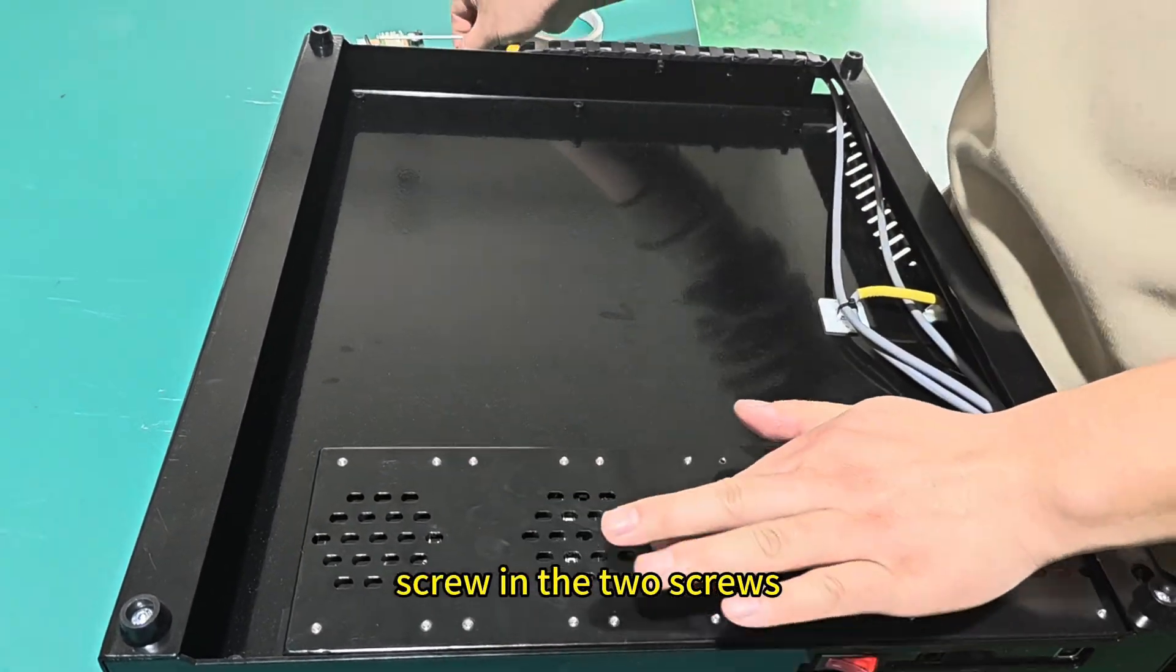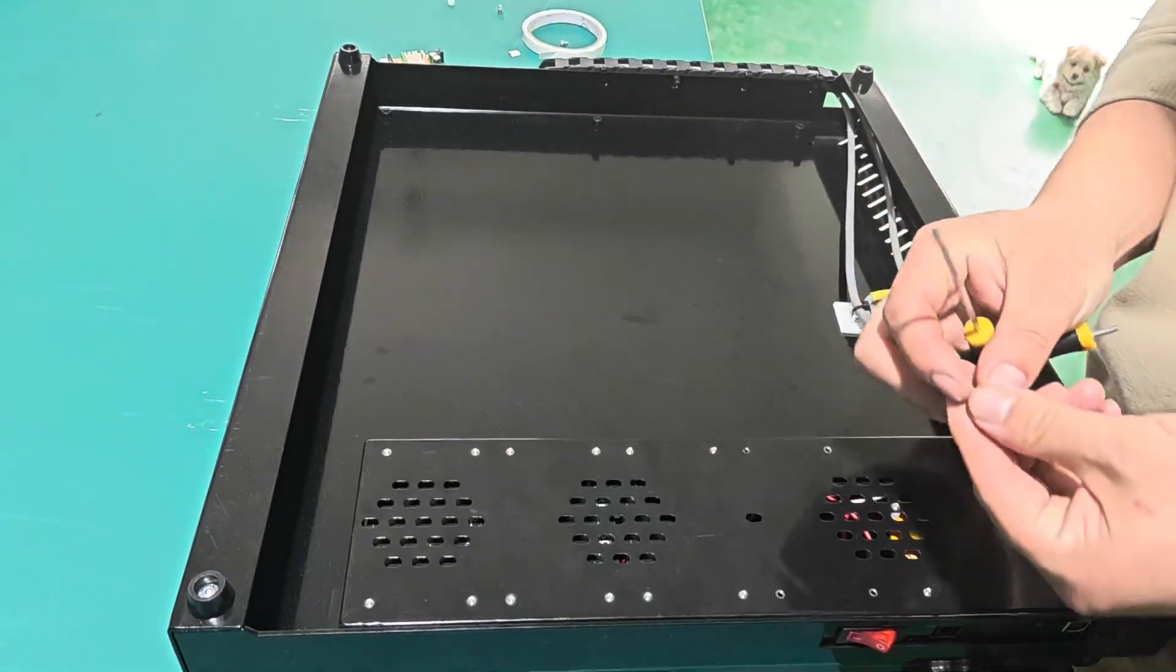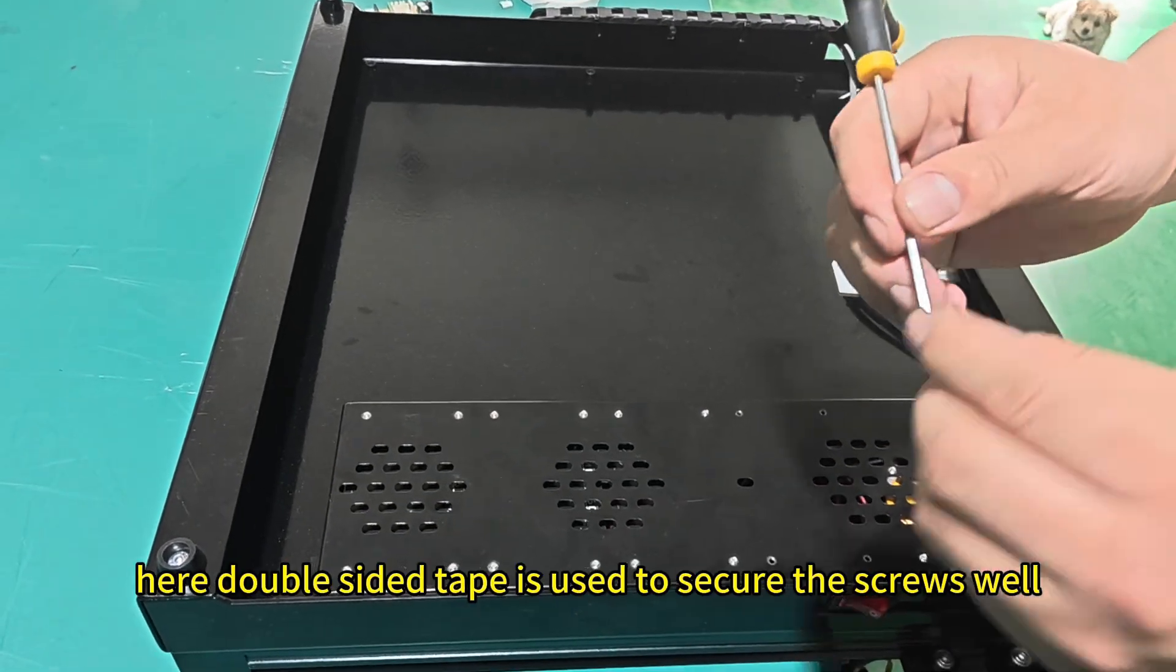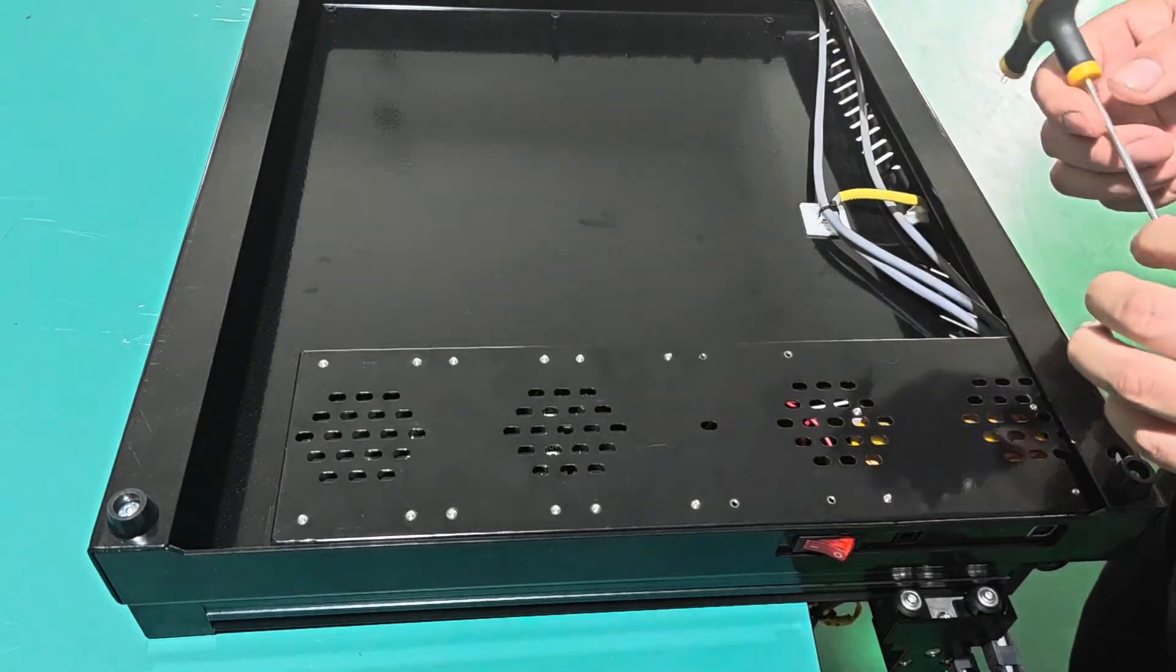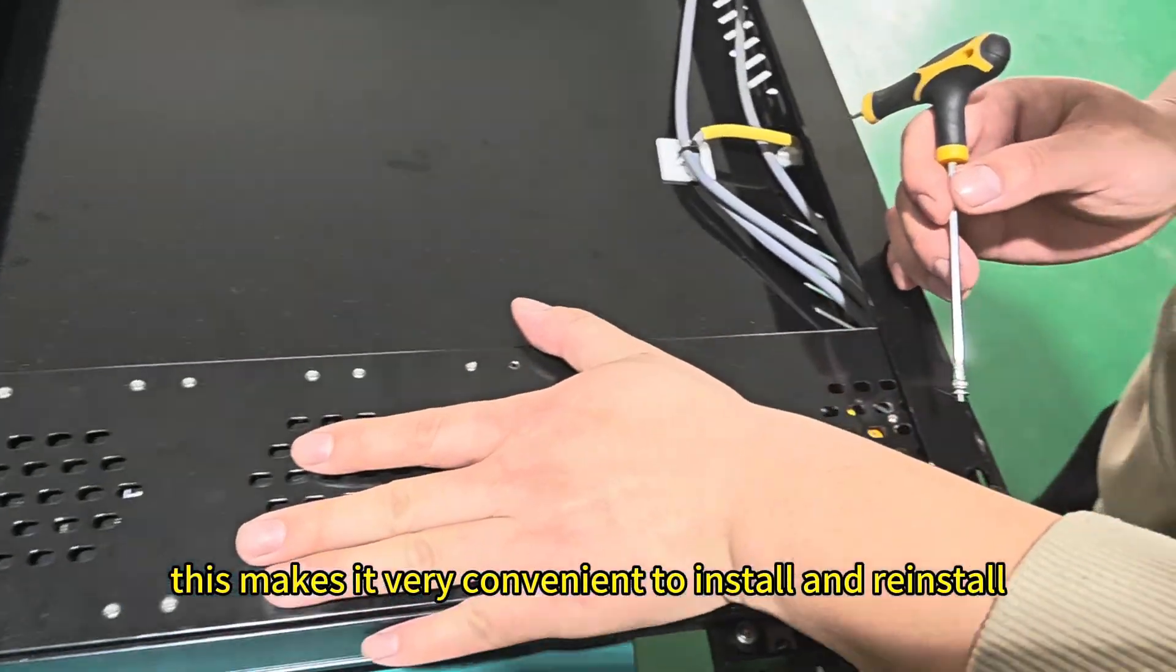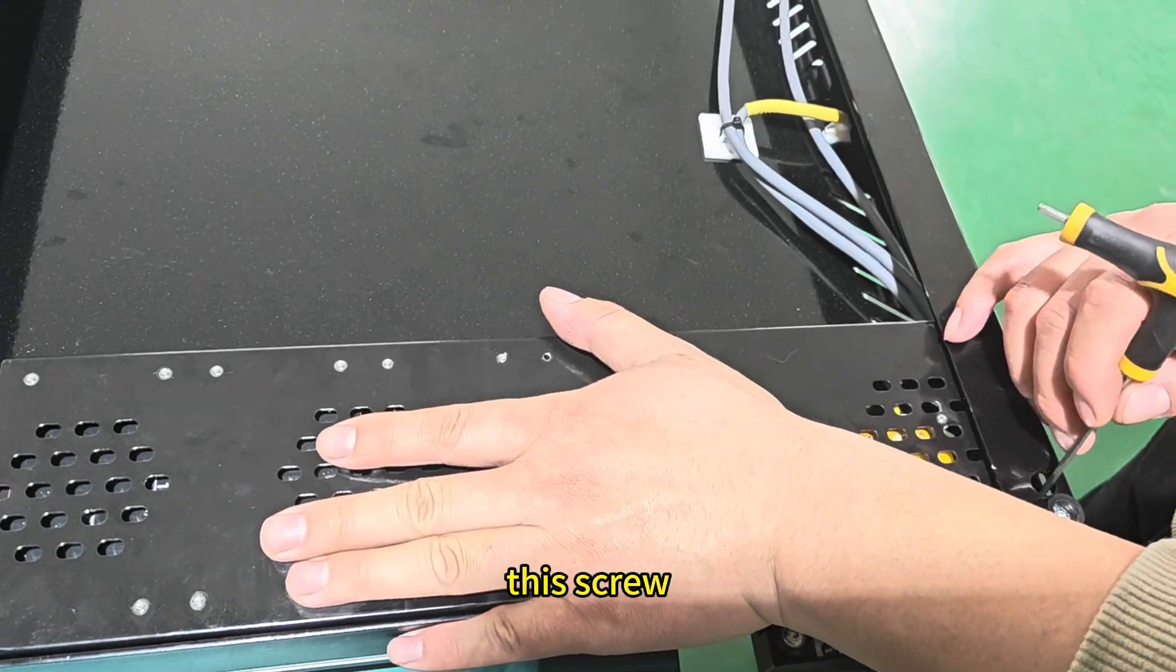Screw in the two screws. Here double sided tape is used to secure the screws well. This makes it very convenient to install and reinstall this screw.